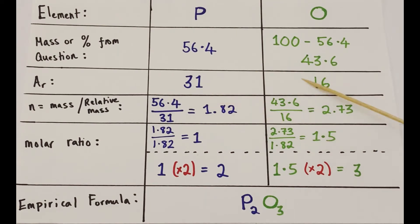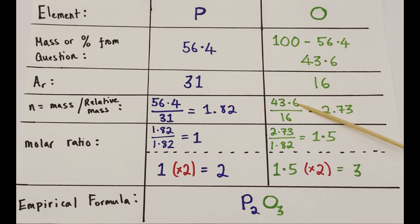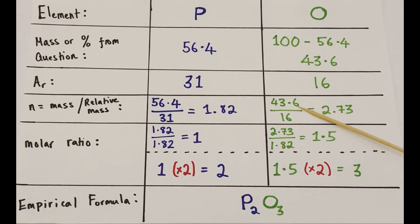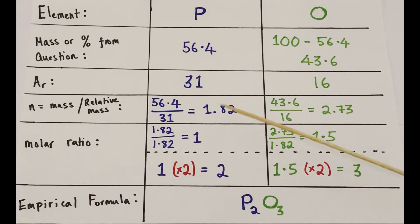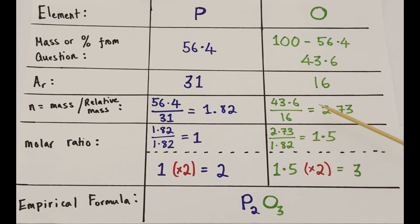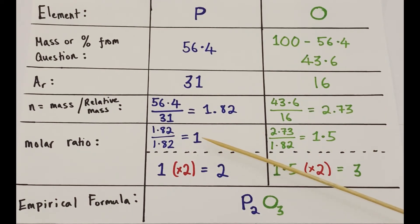Using the grid method: write down the relative atomic masses of phosphorus (31) and oxygen (16) from the periodic table. Divide the percentage mass of each element by its relative atomic mass to get the number of moles. This gives approximately 1.82 moles of phosphorus and 2.73 moles of oxygen. Divide both by the smallest value, 1.82, to get the molar ratio: 1 for phosphorus and 1.5 for oxygen.